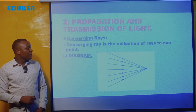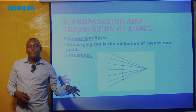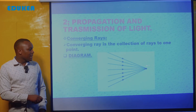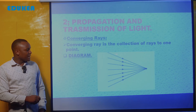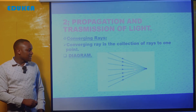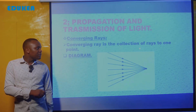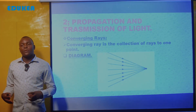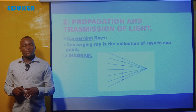When we talk about converging rays, converging ray is the collection of rays coming to the same point. You just converge them — kwa mbao tunasema katika pati mbali mbali unaleta katika one point. That is converging rays.